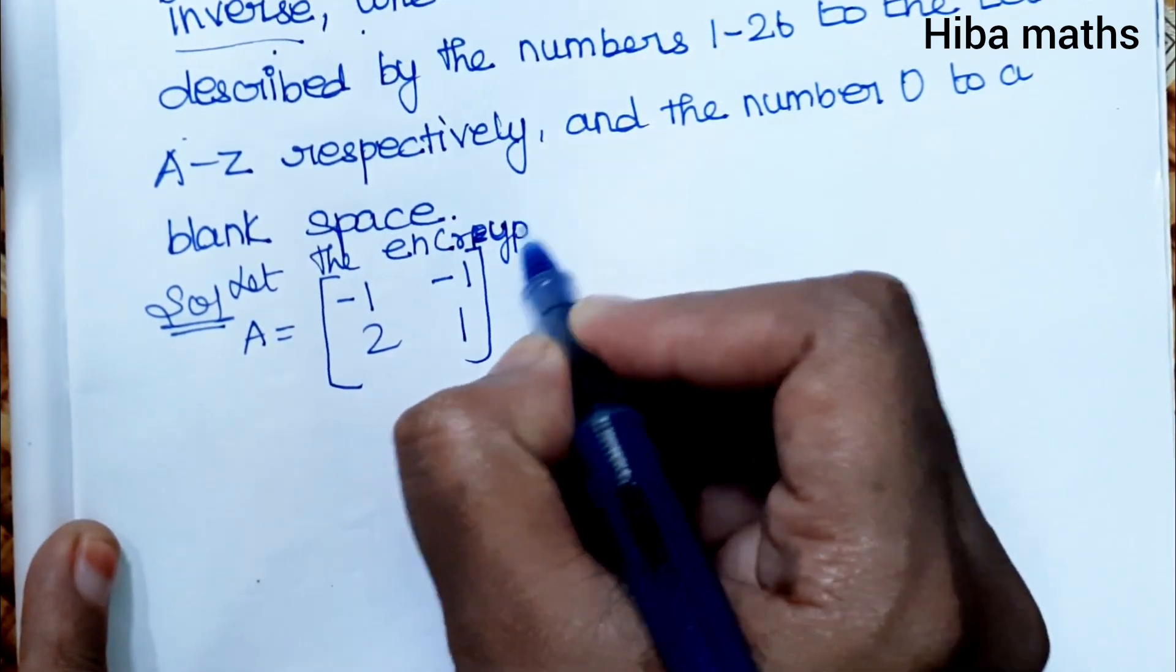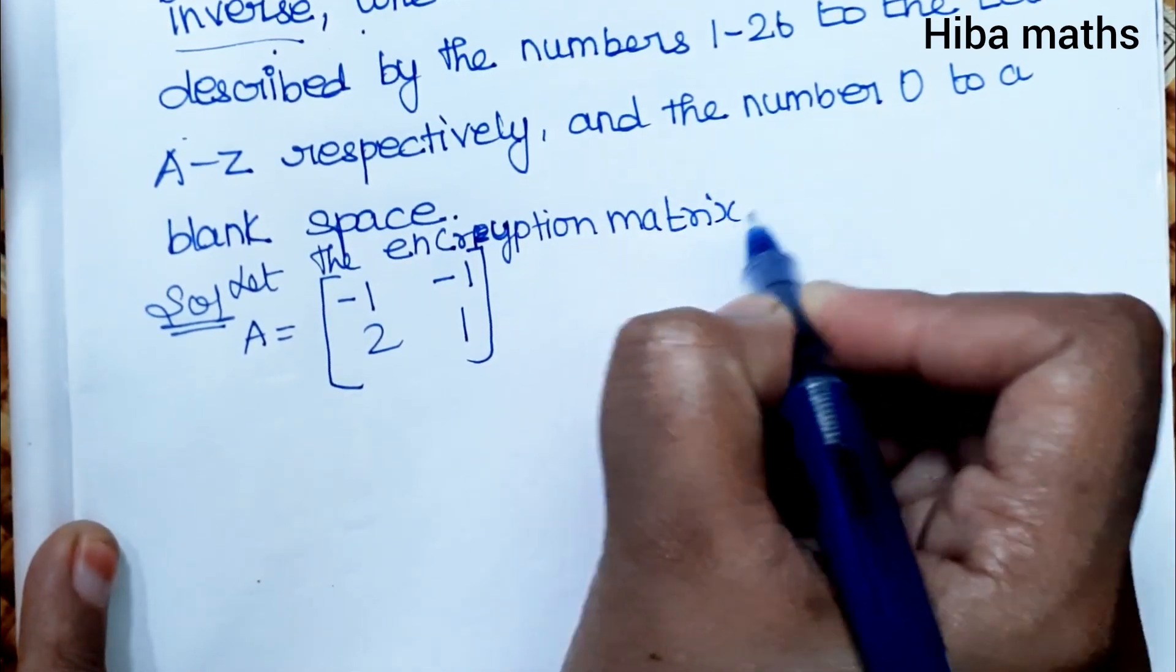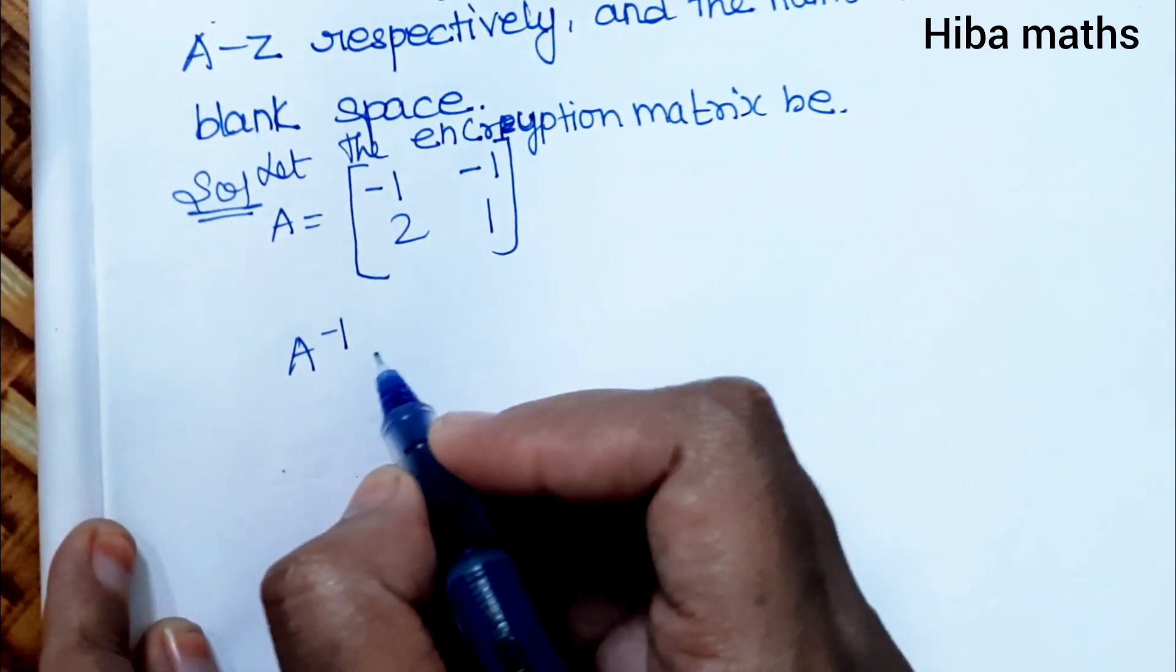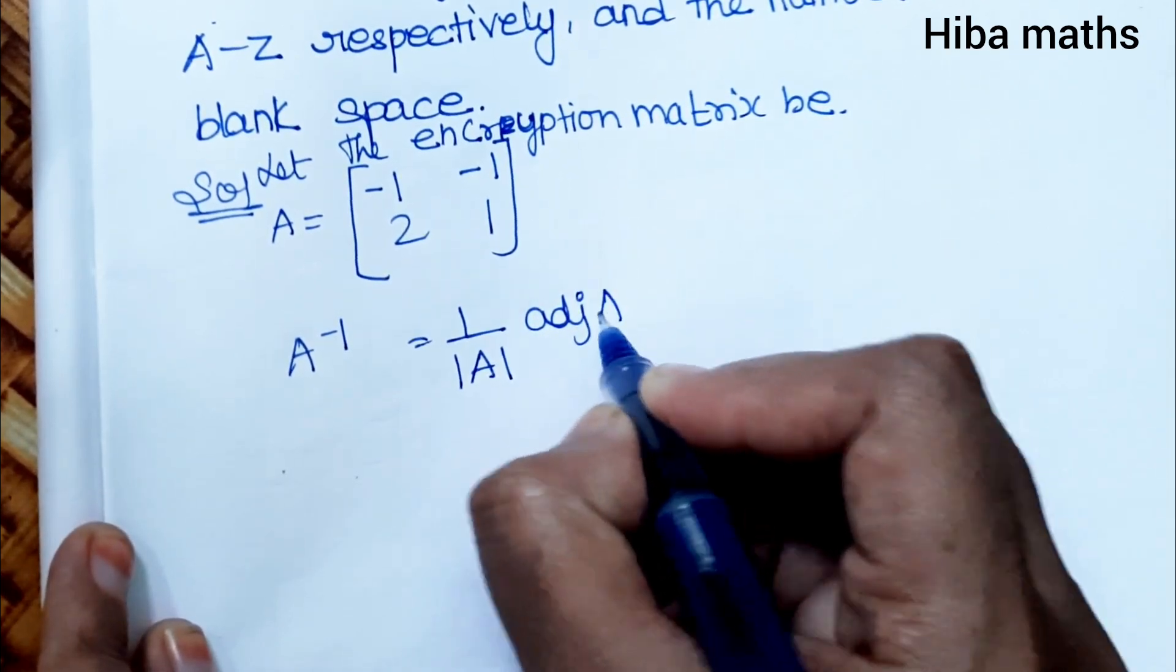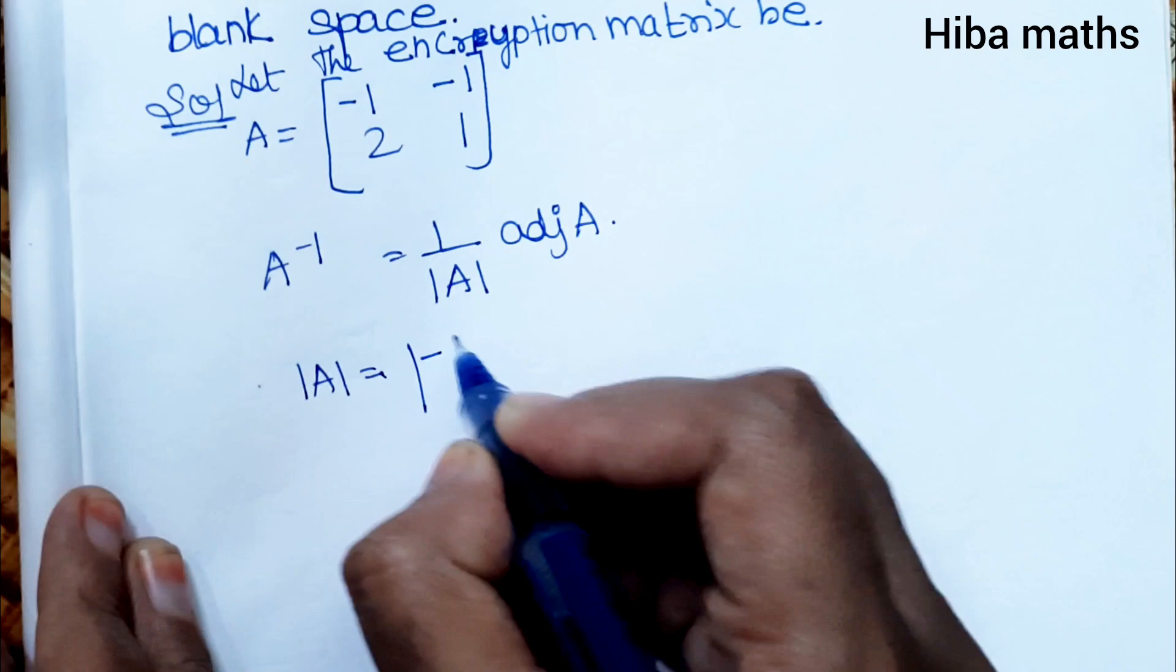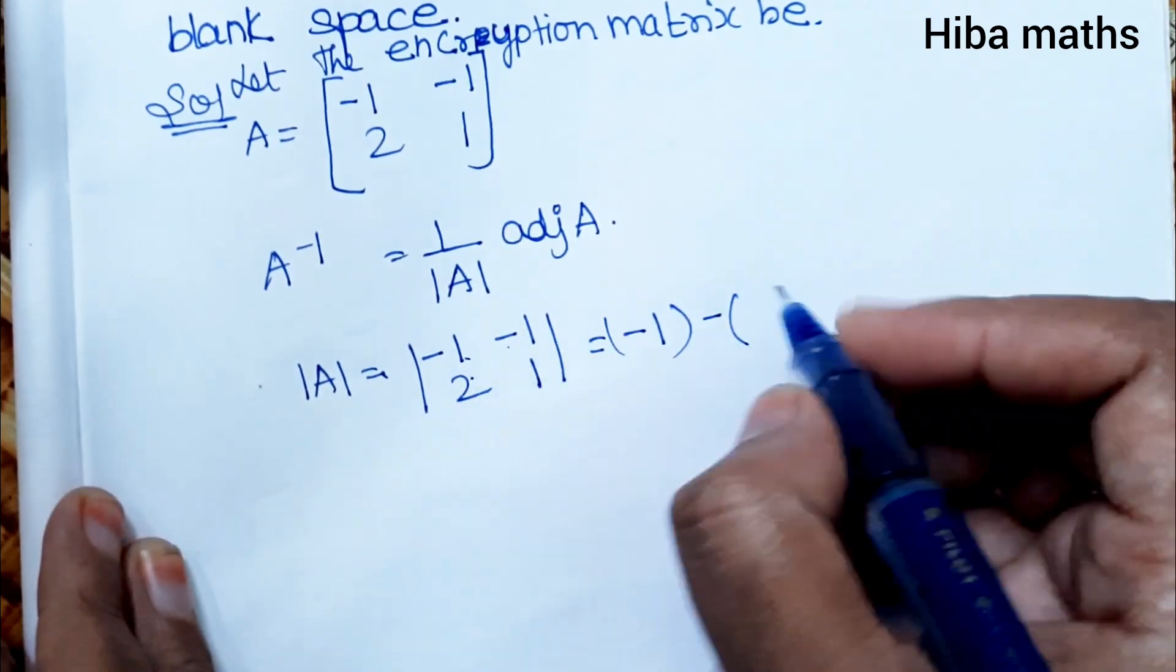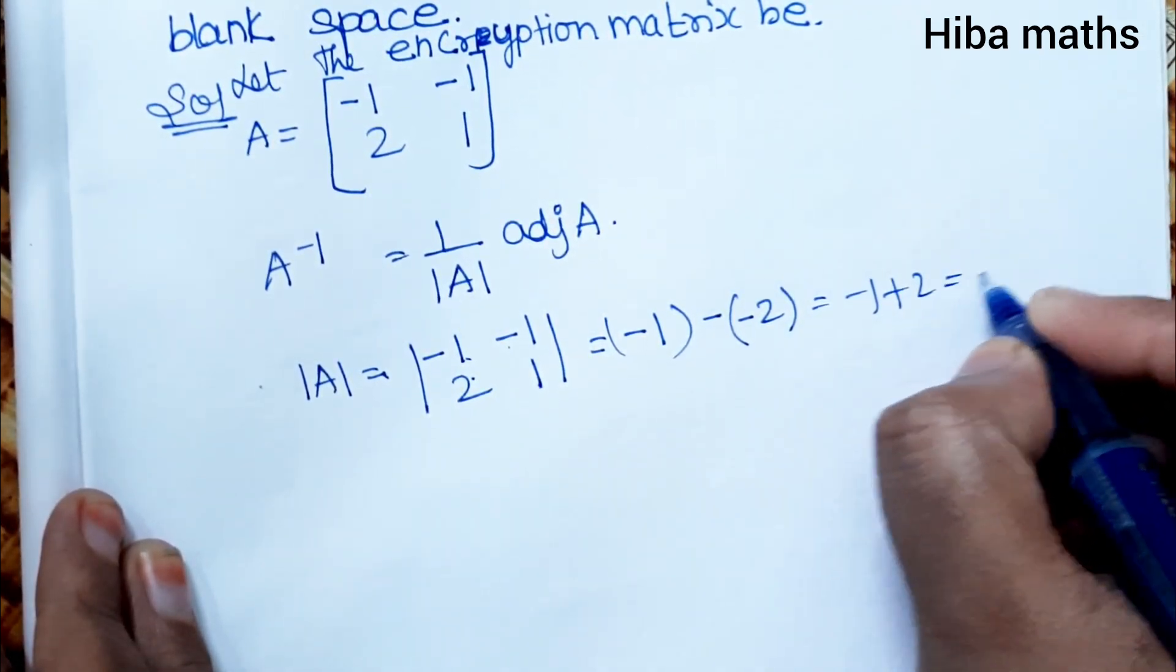A inverse equals 1 over |A| times adjoint of A. First, modulus of A: |A| = |-1, -1; 2, 1| = (-1)(1) - (2)(-1) = -1 - (-2) = -1 + 2 = 1.